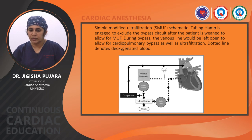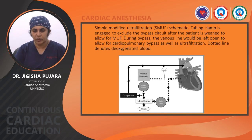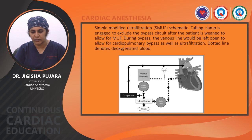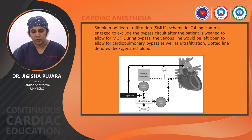In simple modified ultrafiltration, the tubing clamp is engaged to exclude the bypass circuit after the patient is weaned and MUF is started. During bypass, the venous line is left open to allow cardiopulmonary bypass as well as ultrafiltration. When MUF starts, the clamp is applied at the venous side; blood passes from the roller pump through the ultrafiltrator and then back into the oxygenator and into the aorta.